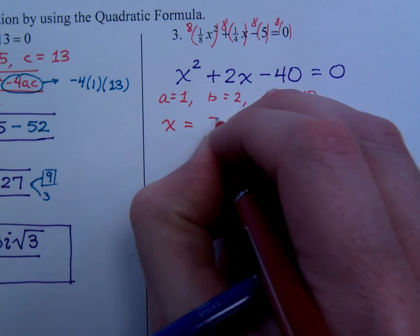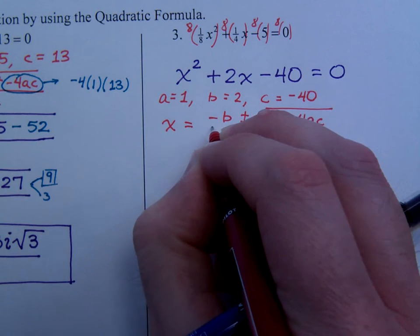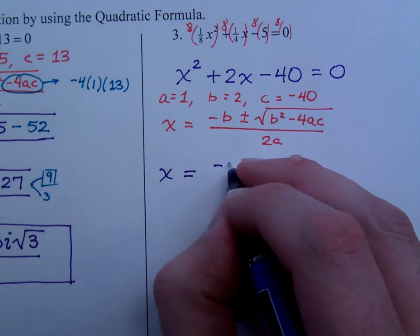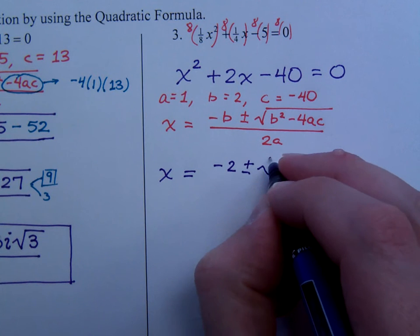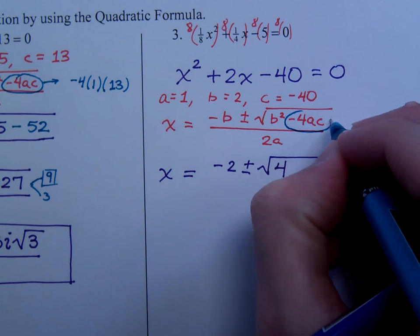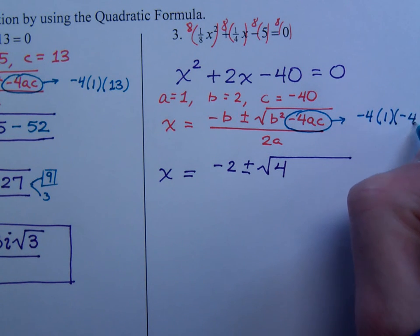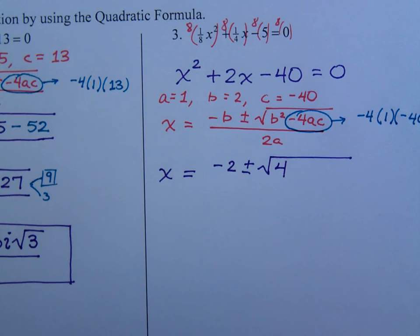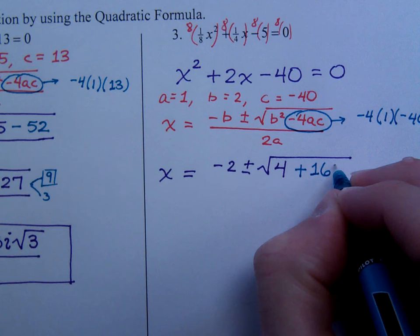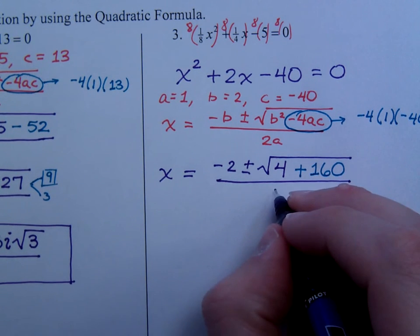Quadratic formula, again we're going to write that every time we use it. Negative b plus or minus the square root of b squared minus 4ac, and this is all over 2a. Oh, just time to plug and chug. Negative b is negative 2, plus or minus the square root of b squared, b is 2, so b squared is 4. Minus 4ac, so negative 4 times a, which is 1, times c, which is negative 40. And all together that gives me a positive, make sure you watch your signs, a positive 160. And this is all over 2a, 2a being just 2 times 1, so that's 2.